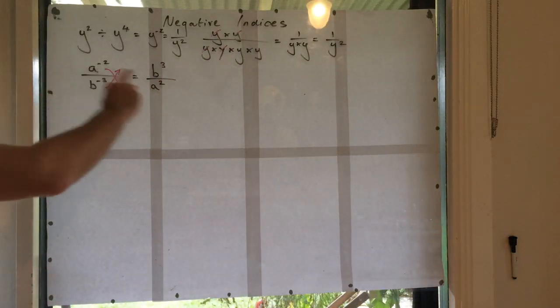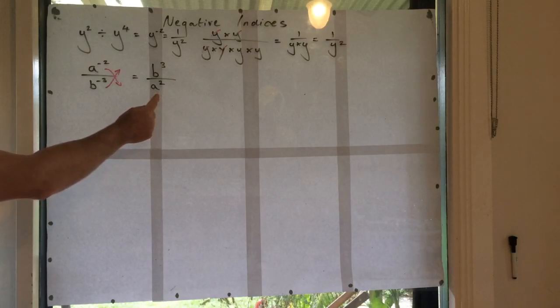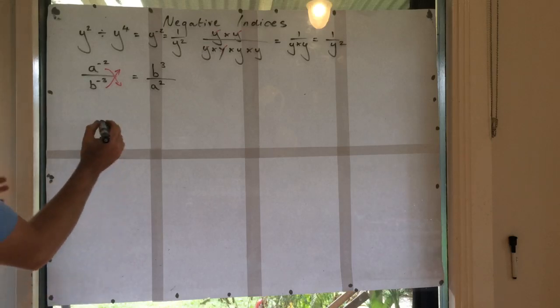Okay, these two are both the same, but this one is better because it's expressed with positive indices, not negative indices. So I might say to you, hey, I want you to express this with positive indices.